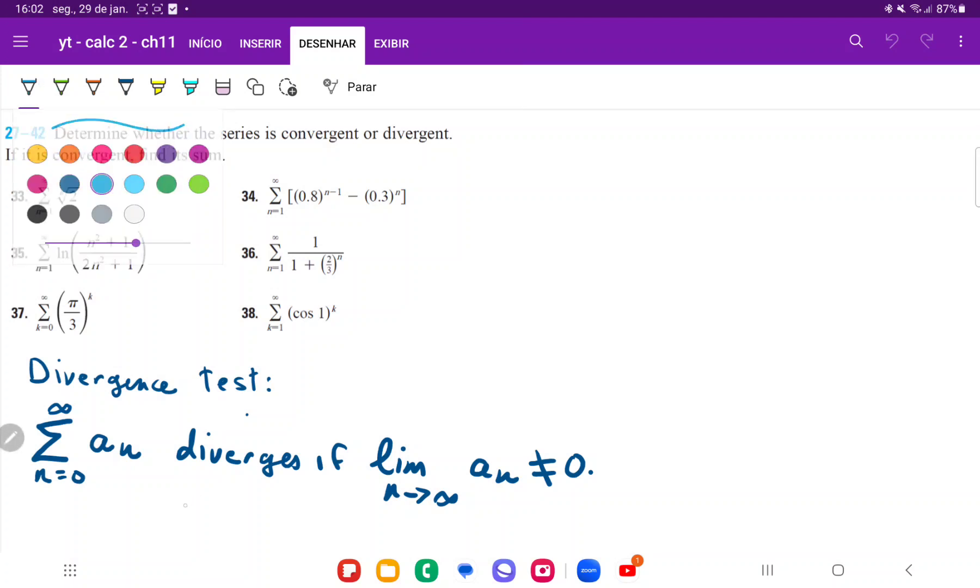The divergence test says that if the limit of whatever it is that you're summing up - so in this case of problem 35, it is this expression here - if the limit as n goes to infinity of whatever you're summing up is not equal to zero, then your series is divergent.